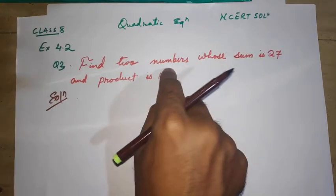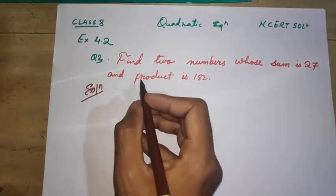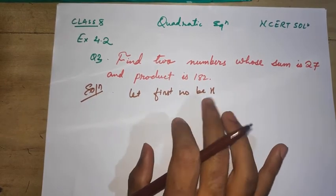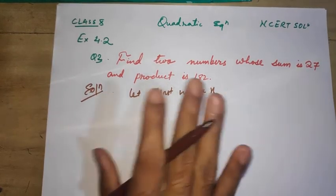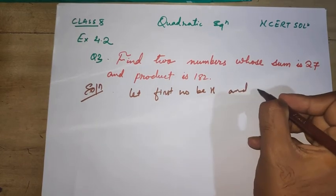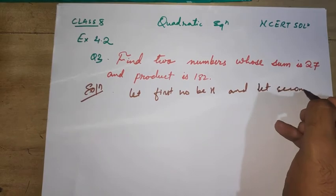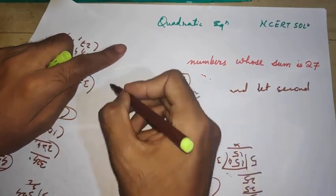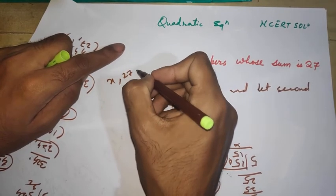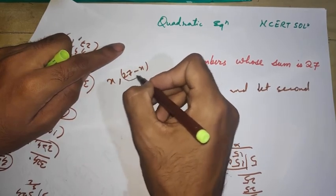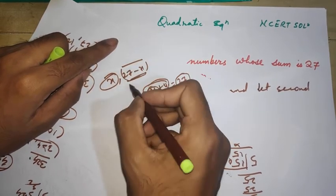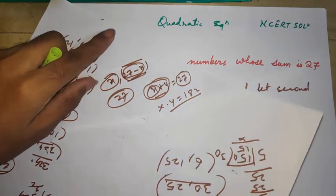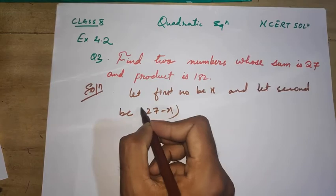First of all, I don't know what the two numbers are. I have no idea what they're asking. So I will simply let the first number be x. We take the unknown term as x. Let the second number be 27 minus x, because the total is 27. If I subtract x from 27, the second number will remain.